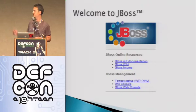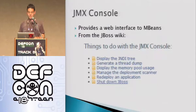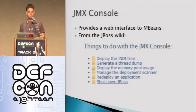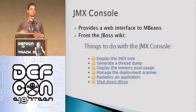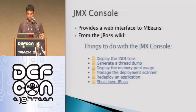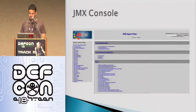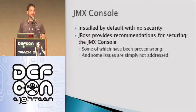Welcome to JBoss. This is the default page you get with your JBoss installation. There are some interesting things that it links you to, and we're going to talk about them. The main way that we talk about doing JMX on JBoss is a web application called the JMX console. You get a web interface to JMX. Things you can do with the JMX console — deploying code is always nice, shutting down the server is always fun. The JMX console is installed by default with zero security. You put up your JBoss server, there's the JMX console — no passwords, no encryption, no nothing.